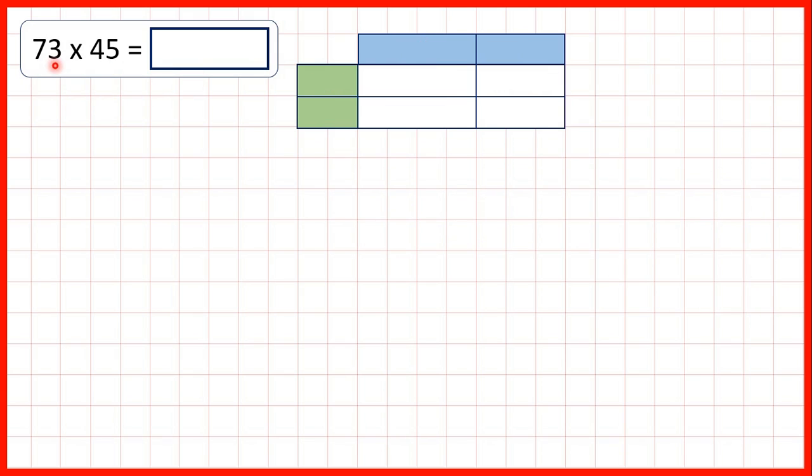Now let's try 73 times 45. With 73, we have 70 and 3. And with 45, we have 40 and 5. So let's write our partitioned numbers on the grid. We have 70 and 3. And then, we have 40 and 5.